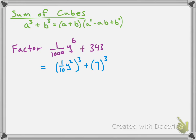So now this is clearly a sum of cubes. So now we pretty much just have to apply the formula, but we also need to recognize that 1 over 10 y squared is our a, and 7 is our b. So applying the formula, we have a plus b first. So that's going to be 1 over 10 y squared plus 7.